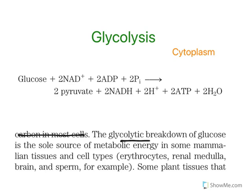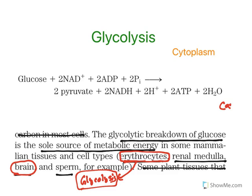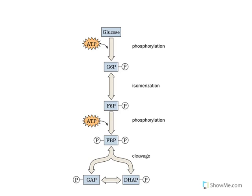The glycolytic breakdown of glucose is the sole source of metabolic energy in some tissues like erythrocytes, renal medulla, brain, and sperm. Erythrocytes do not have a nucleus or mitochondria — without mitochondria, citric acid cycle and oxidative phosphorylation cannot occur, so only glycolysis in the cytoplasm provides ATP. Even in the brain, lipids cannot easily cross the blood-brain barrier, so brain is mostly dependent on glucose. Similarly, sperm and renal medulla also rely solely on glycolysis for energy.